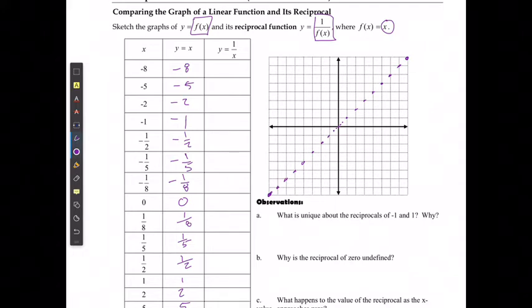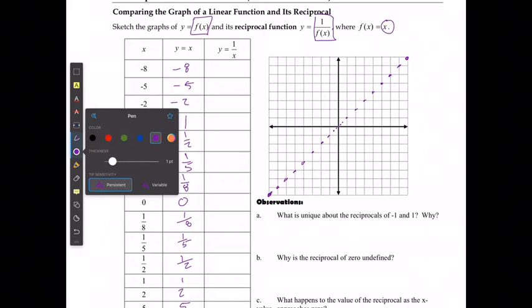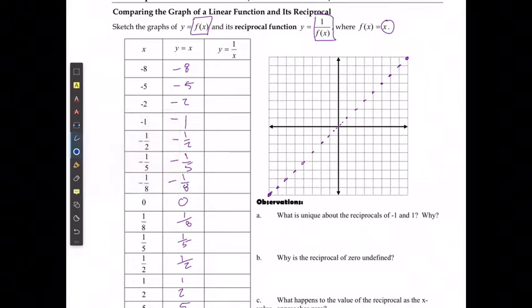If I'm going to do the reciprocal function, the value of y is always going to be the reciprocal of what it was. So the reciprocal of negative 8 is negative 1 over 8, of negative 5 is negative 1 over 5, then negative 1 over 2, negative 1, negative 2 over 1 or negative 2, negative 5, negative 8.